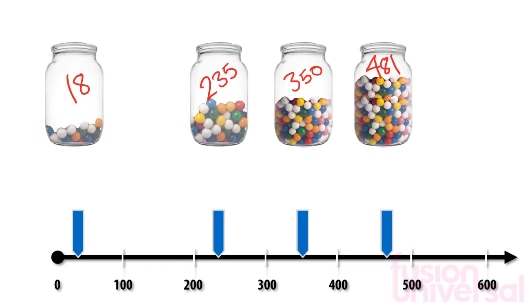We want to say roughly how many sweets are in each jar. So we are going to round them to the nearest 100.